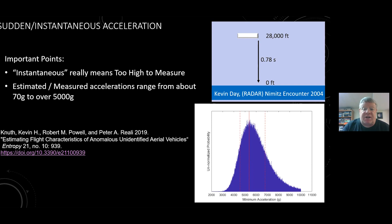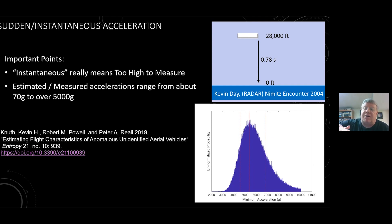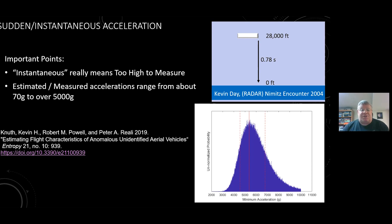The minimum acceleration for that drop maneuver — accelerating to the midpoint at rate A and then decelerating at the same rate — gives over 5,000 Gs. You could have a different acceleration profile, but that would only be a greater acceleration. So this is the minimum possible acceleration, which is impressive.